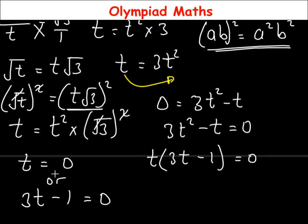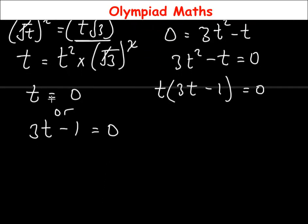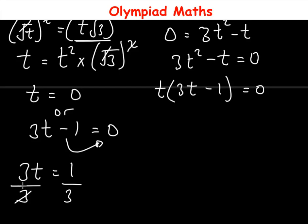We've gotten the first value t equals 0, though we will still check if this is correct. Continuing to solve for the other value from 3t minus 1 equals 0: move minus 1 to the other side — it becomes plus 1 — so 3t equals 1, then divide both sides by 3, giving t equals 1 over 3.